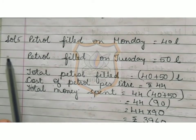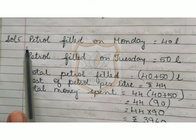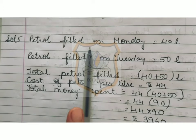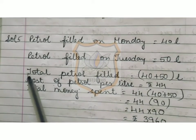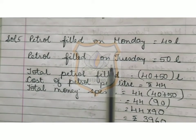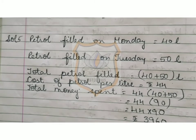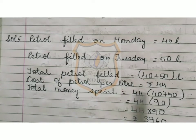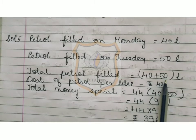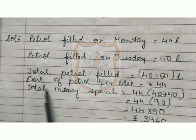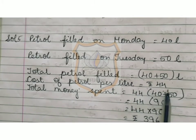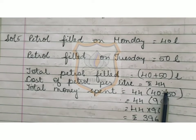So now solution for sum number 5. Petrol filled on Monday is equal to 40 litres. Petrol filled on Tuesday is equal to 50 litres, as given in the question. Now total petrol filled is 40 plus 50. Cost of petrol per litre is equal to Rs. 44, which is also mentioned in the question.